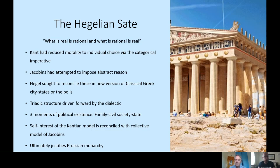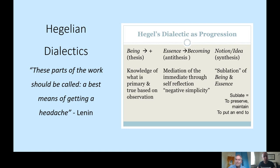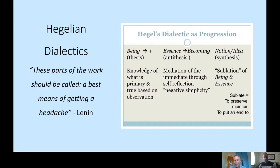Now the big one — this is probably what most people came here for. Hegelian dialectics. Lenin described these parts of Hegel's work as a best means of getting a headache, because they are quite complex. We've left this to last because if people have coped with what we've got to so far, this is like getting through the quarterfinal and the semifinal — now this is the final.